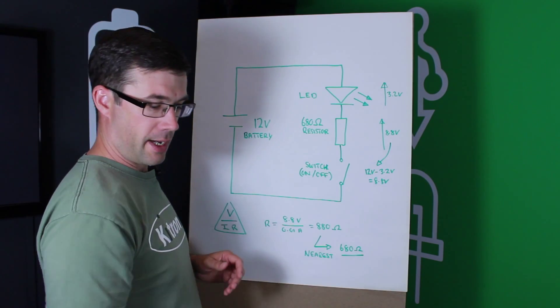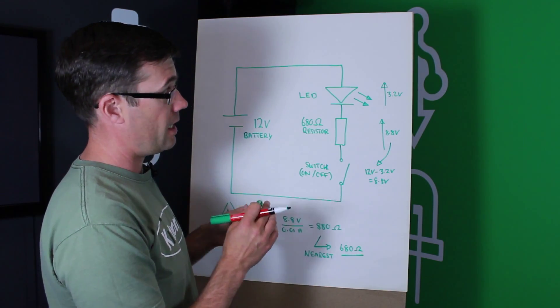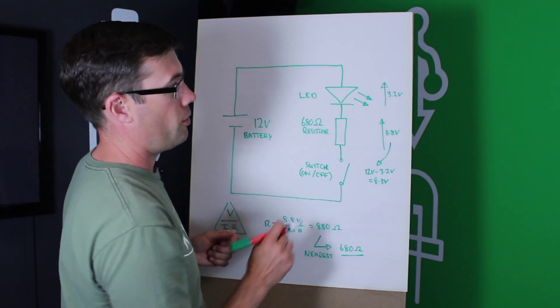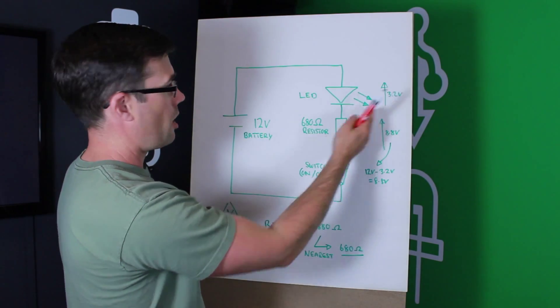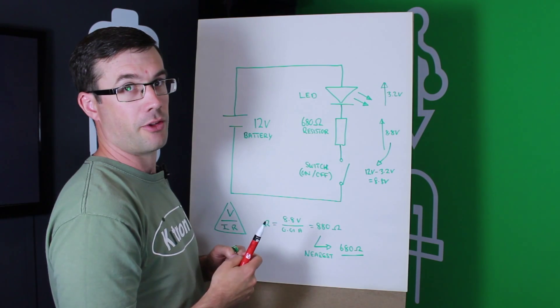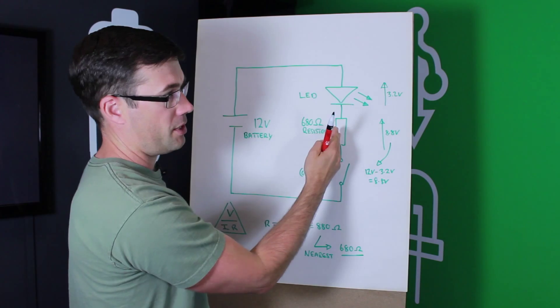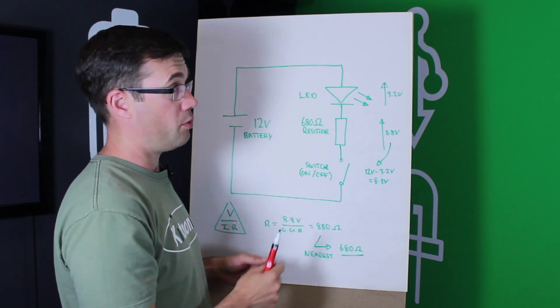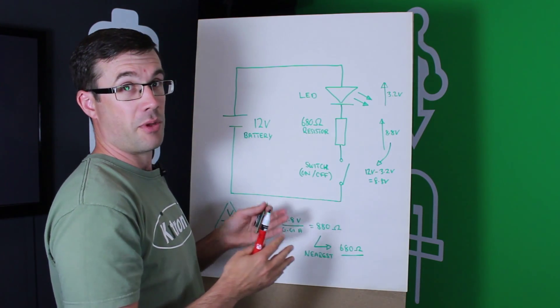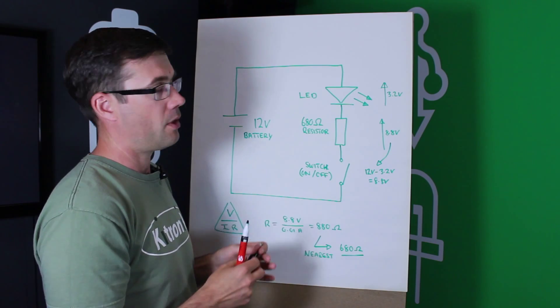Now, the forward voltage for the white LED, which we can see used in the kit here, is actually 3.2 volts. This is much lower than the 12-volt battery supply that we have. If we did apply the 12-volt battery supply directly to the LED with no resistor, the LED itself would be very bright briefly, but then it would become damaged and burnt out.